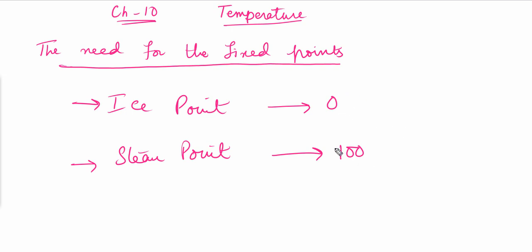The ice point is given the number zero, and the point at which water boils is called the steam point, given the number 100. Between these two points we make 100 divisions, and each division is considered one degree Celsius. So the ice point is 0°C, the steam point is 100°C, and we use these fixed points to create a reference for measuring temperature.